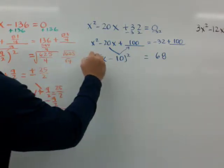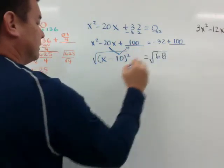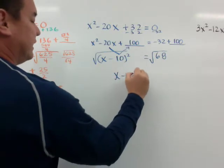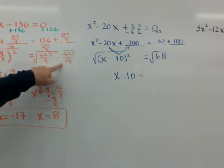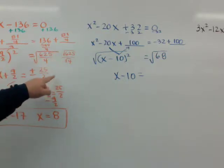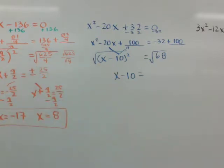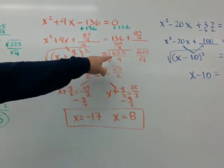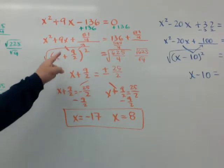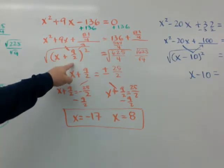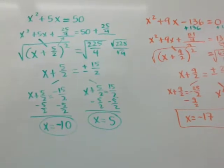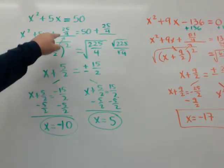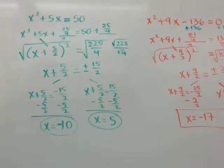Take the square root of both sides. I get x minus 10 equals plus or minus the square root of 68. Because 68 isn't a perfect square, we use a calculator and get plus or minus approximately 8.25. Note: for fractions, I leave them as fractions when squaring — for example, 9 over 2 stays as a fraction, not 4.5 squared into a decimal. Same here: 5 over 2 squared stays as 25 over 4.